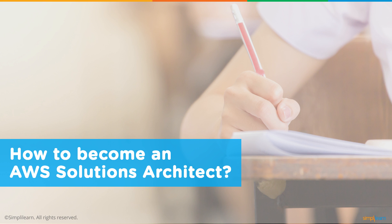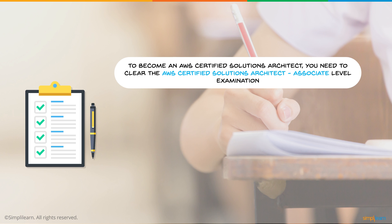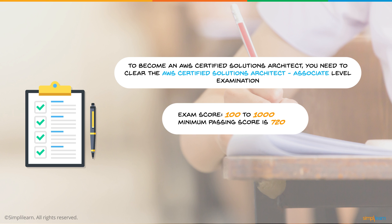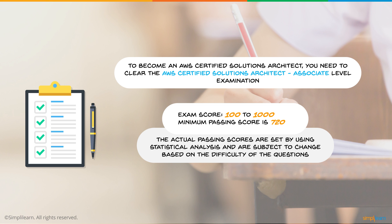To become an AWS certified solutions architect, you need to clear the AWS certified solutions architect associate level examination. The exam score ranges from 100 to 1000 marks and the minimum passing score is 720. However, the passing marks are actually set using statistical analysis, so they can be changed based on how difficult the examination actually is.